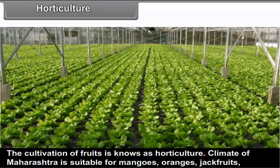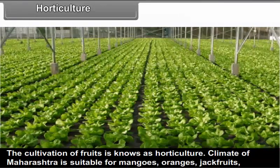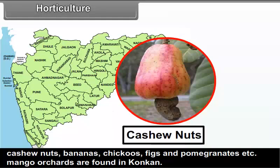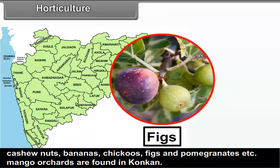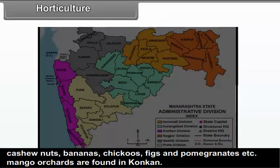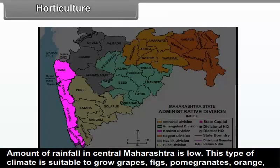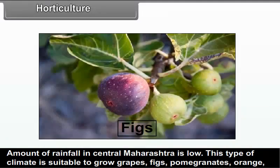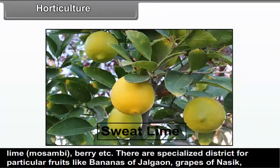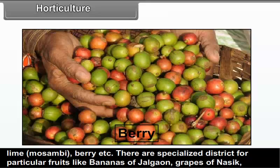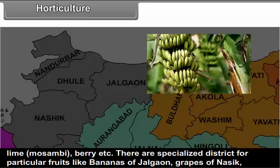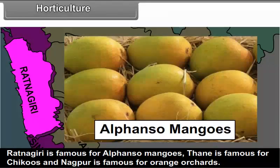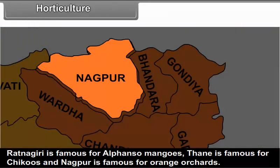Horticulture: The cultivation of fruits is known as horticulture. The climate of Maharashtra is suitable for mangoes, oranges, jackfruits, cashew nuts, bananas, chikus, figs, and pomegranates. Mango orchards are found in Konkan. Low rainfall in central Maharashtra is suitable for grapes, figs, pomegranates, orange, sweet lime (mosambi), and berry. There are specialized districts for particular fruits: bananas of Jalgao, grapes of Nasik. Ratnagiri is famous for Alphonso mangoes. Thane is famous for chikus and Nagpur is famous for orange orchards.